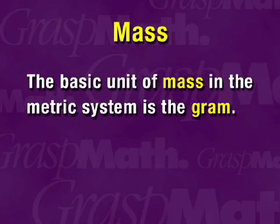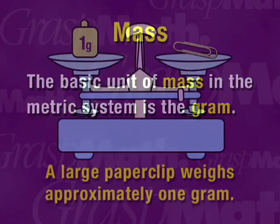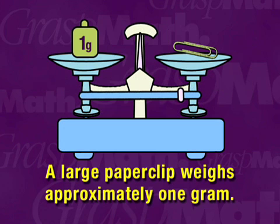The basic unit of mass in the metric system is the gram. Probably the best way to remember the gram is the fact that a large paperclip weighs approximately one gram. So that will give you an idea of about how much one gram is — it's about the weight of a paperclip.